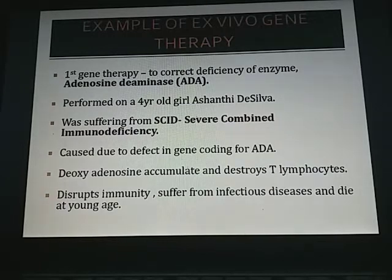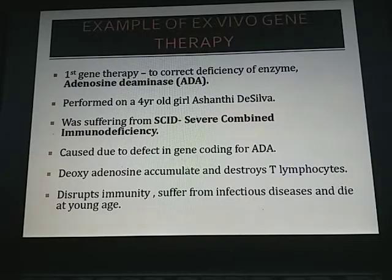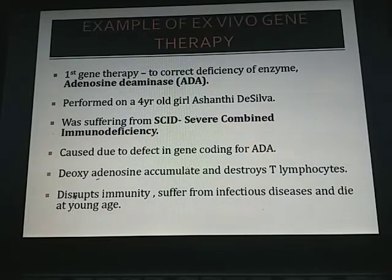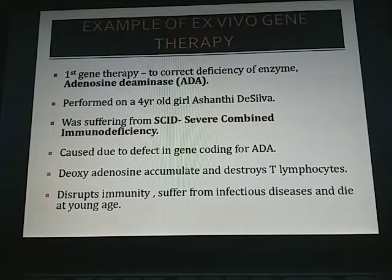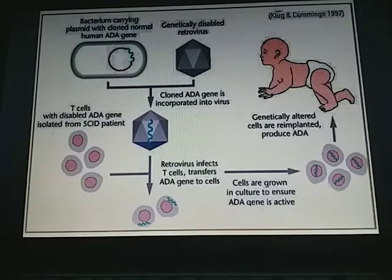An example of ex vivo gene therapy is the correction of adenosine deaminase enzyme deficiency. It was performed on a four-year-old girl named Ashanti de Silva, who suffered from severe combined immunodeficiency caused by a defective gene coding for adenosine deaminase. Deoxy adenosine accumulates due to this defect, destroys T lymphocytes, disrupts immunity, and causes patients to die at a young age.